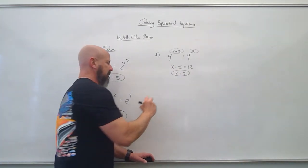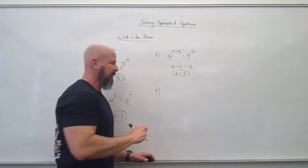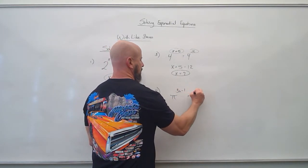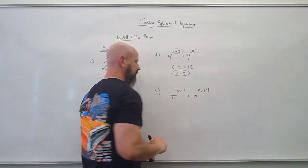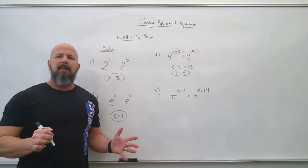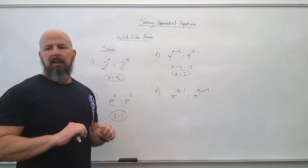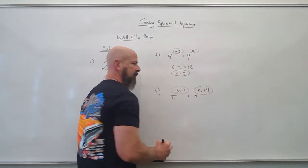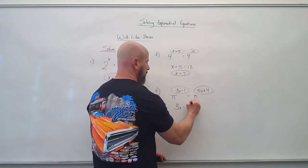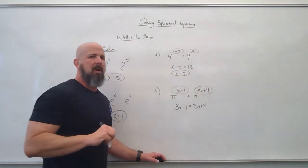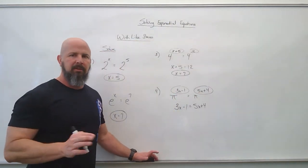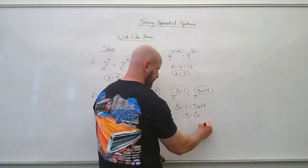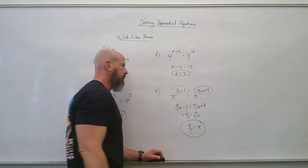We can make the exponents even more elaborate. Let's go pi to the 3x minus 1 equals pi to the 5x plus 4. The key is both have pi, so the bases are the same. That means 3x minus 1 must equal 5x plus 4, and then we're just solving equations. Subtracting terms gives negative 2x equals 5, so x is negative 5 halves.